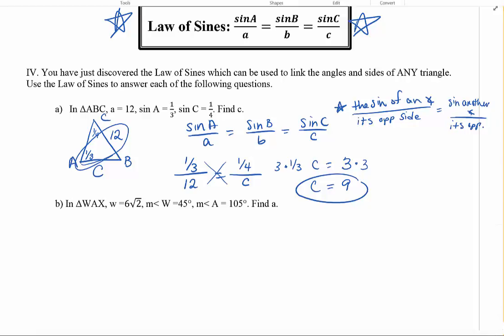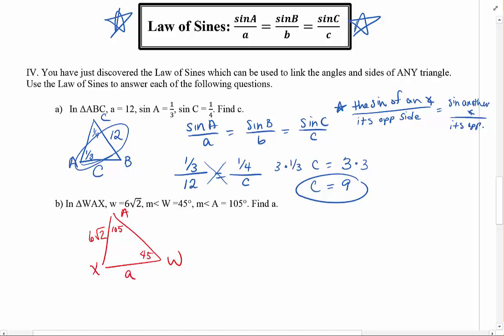The other way to do these is, instead of giving you the sine of the angle, they give you the angle itself. So in triangle WAX, W is 6 root 2. So the side across from W is 6 root 2. Angle W is 45 degrees. Angle A is 105. And side A is what I need.